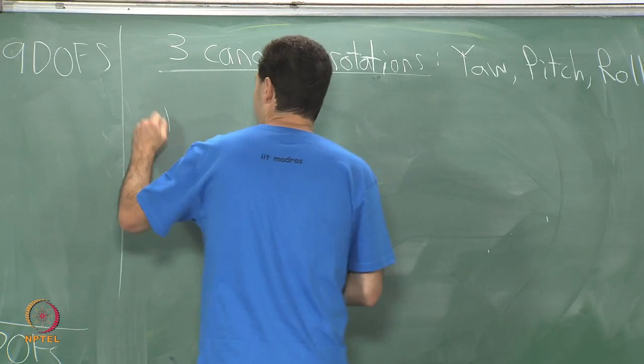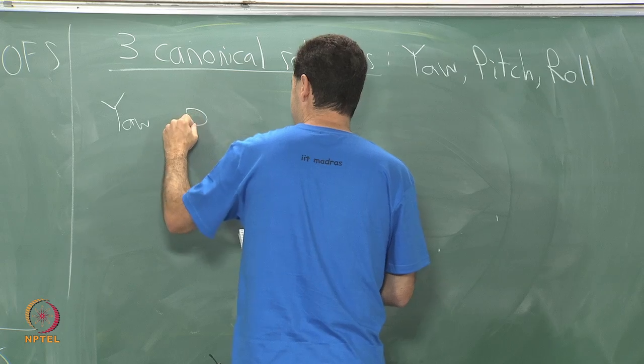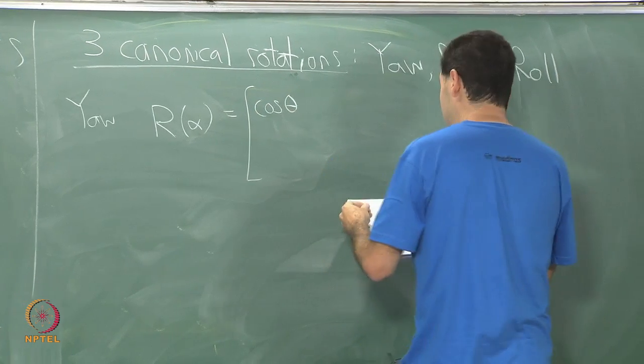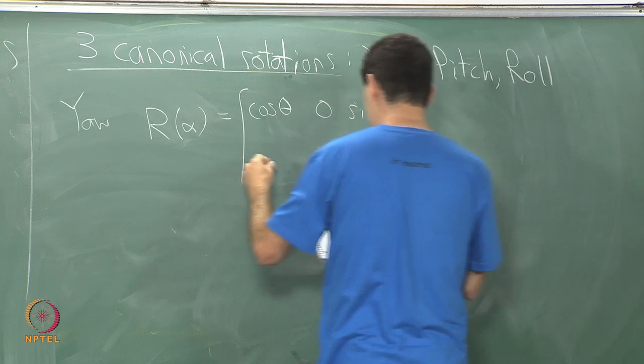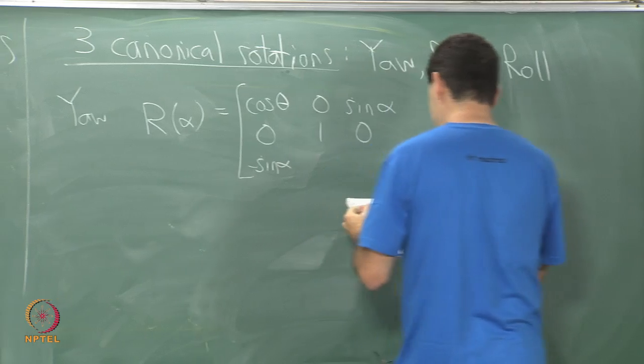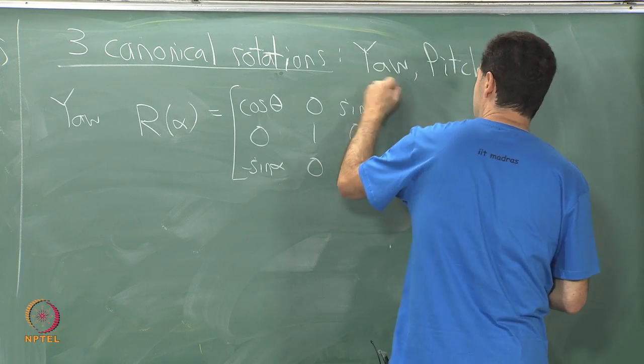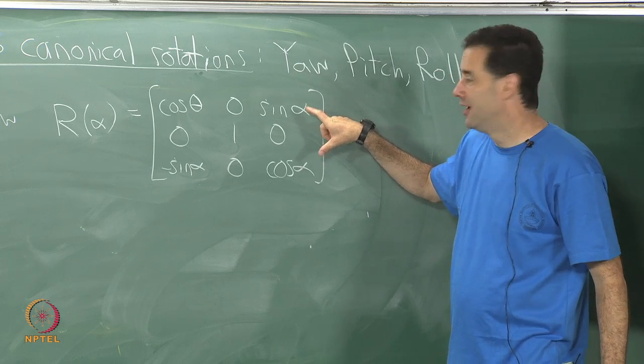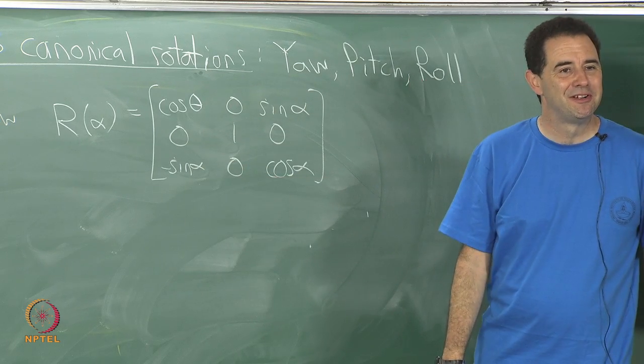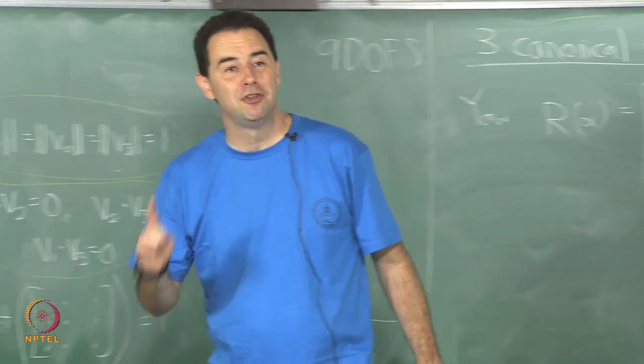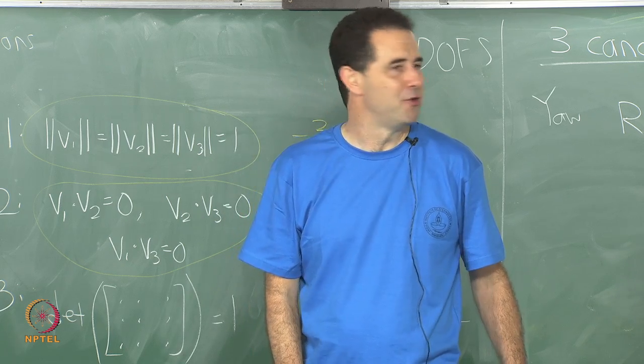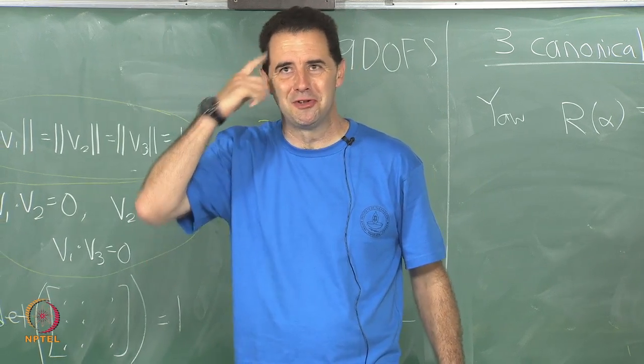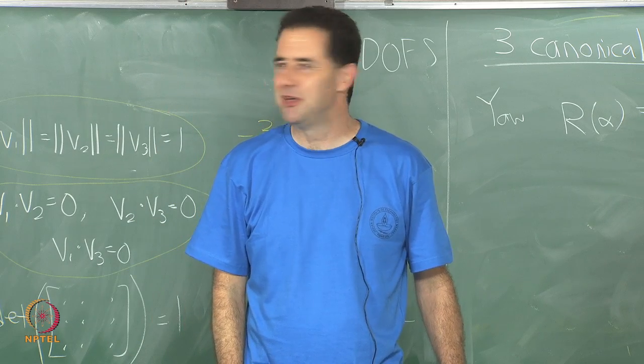Yaw. I will write it like this. I will say it is a rotation matrix with a parameter alpha and it looks like this: cosine alpha, 0, sine alpha, 0, 1, 0, minus sine alpha, 0, cosine alpha. This looks a lot like the two dimensional rotation matrix if you look at the corners, and the center part looks a lot like the identity matrix, right.